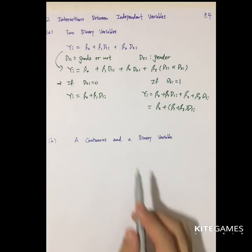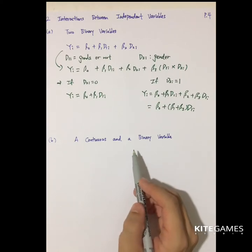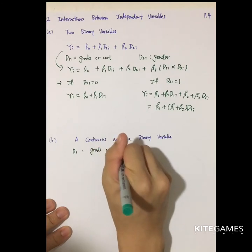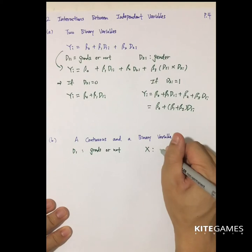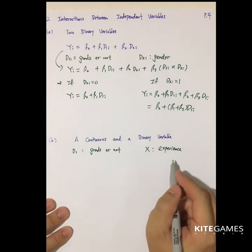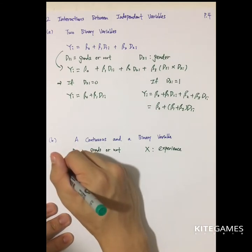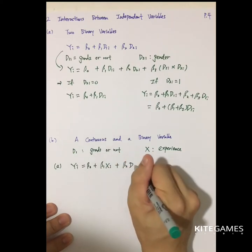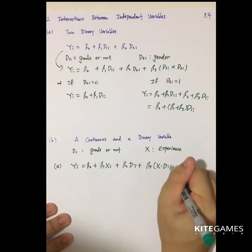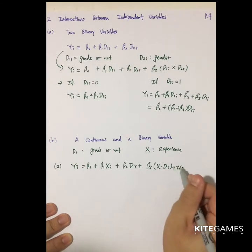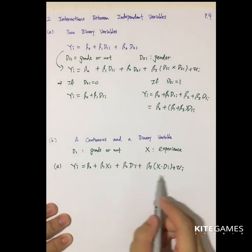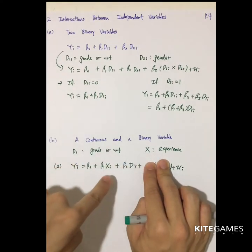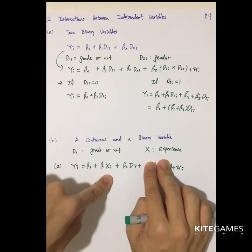The second case is a continuous variable interacting with a binary variable. For example, the binary variable could be education level — graduated or not — and X is a continuous variable, maybe job experience. The more experience, the higher the salary. The model is: Y_i = β0 + β1·X_i + β2·d_i + β3·(X_i × d_i). If we don't add the interaction term, the effect of accumulating experience would be the same regardless of whether the worker is graduated or not. Again, this is not reasonable.